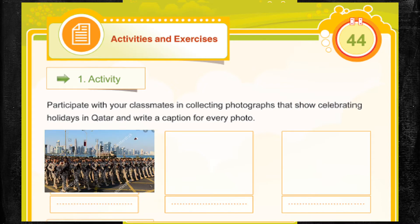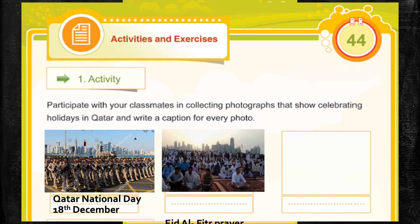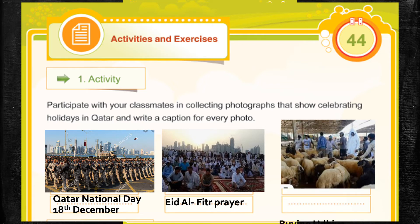The first event I've chosen is Qatar National Day, celebrated on 18 December. You can put a caption down there. The next one is Eid al-Fitr prayers. You can write the caption down below. And the last one I've chosen is Eid al-Adha, where people buy sheep, goat, camel, and cows. Now you can print and paste or you can draw if you're very good at drawing. Do not forget to write the captions down below.